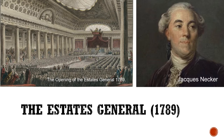The Estates General had representatives from all three estates of French society. The way votes happened, each estate got essentially one vote. The problem was the first two estates would always outvote the third estate, meaning any radical changes would always be overturned. Their self-interest — not wanting to be taxed, not wanting major changes — meant the Estates General didn't end up doing anything. It almost immediately fell into bickering and arguing.